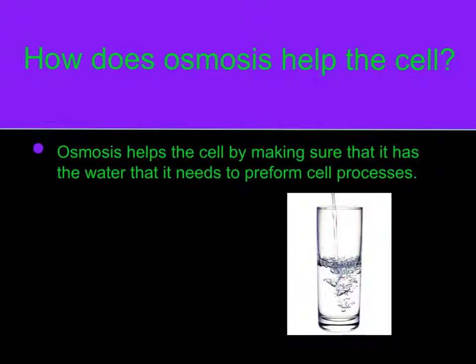How does osmosis help the cell? Osmosis helps the cell by making sure that it has the water that it needs to perform cell processes. I hope this helps you understand osmosis. Thank you.